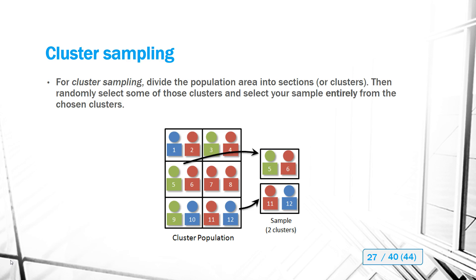In cluster sampling, you divide the population area into sections called clusters, then randomly choose which clusters to include in the sample. Unlike stratified sampling where you take certain members from each group, in cluster sampling you take every member of each randomly selected cluster. In the example, 12 population members are divided into six clusters, two clusters are randomly selected, and all members of those clusters are included in the sample.